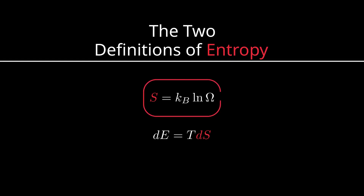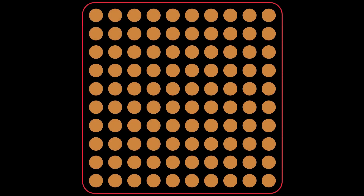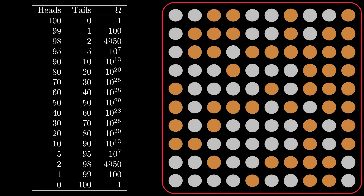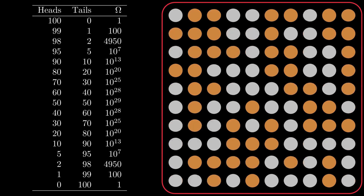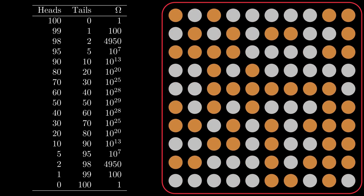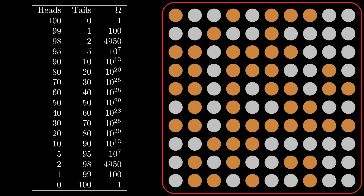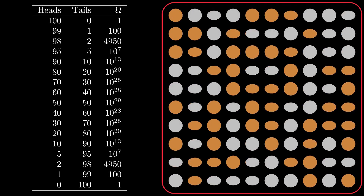First, entropy measures the number of ways a state could exist. Say we have 100 coins. There is only one way for all coins to be heads, so this is a low entropy state. On the other hand, there are billions of billions of billions of ways for 100 coins to be half heads and half tails. So this is a high entropy state.